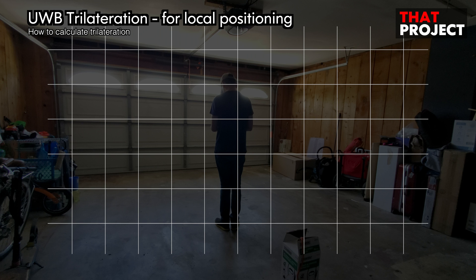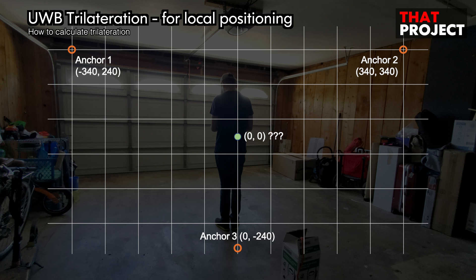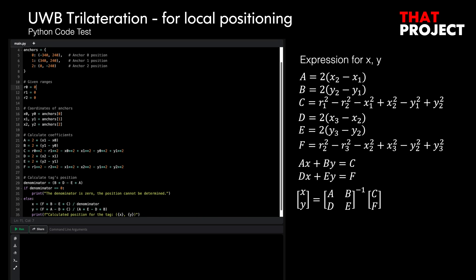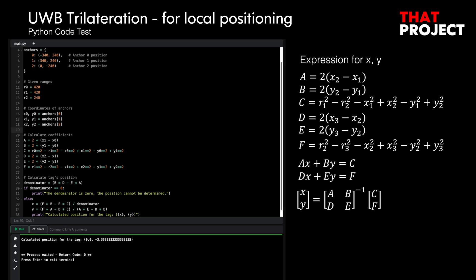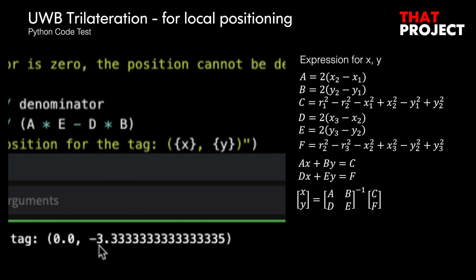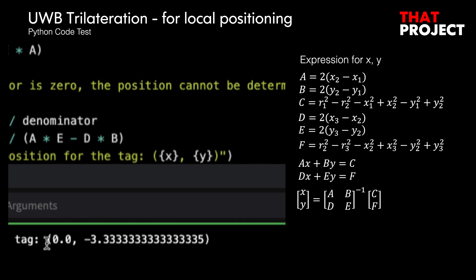Based on this, we can calculate the position of the tag. Let's think of the floor in my garage as a 2D coordinate plane. I set the center of the garage as (0,0) and installed anchors at both corners of the garage and the back wall. After that, I was able to get the local coordinates of the anchors. If I rewrite the formula we derived earlier in Python, it will look like this — just update the r values obtained from each anchor. As a result of the calculation, I was able to obtain an approximation close to (0,0).